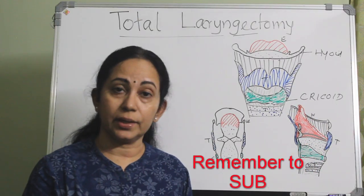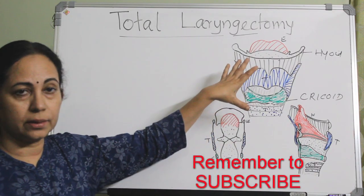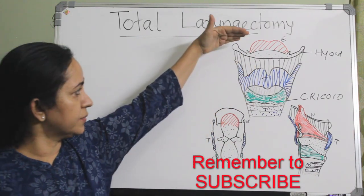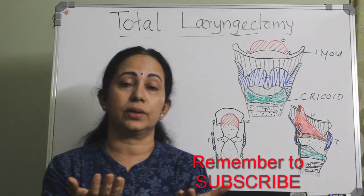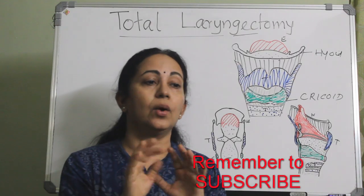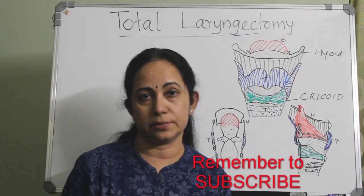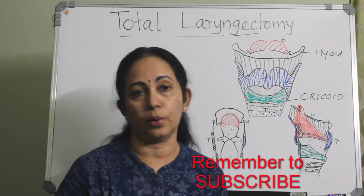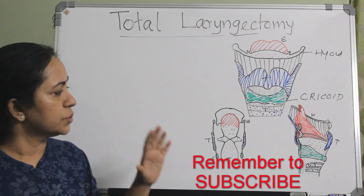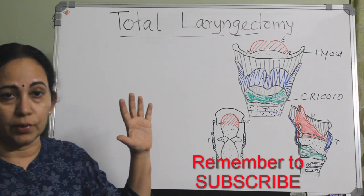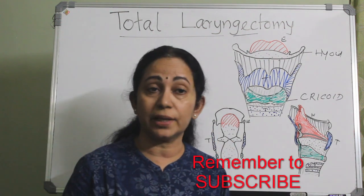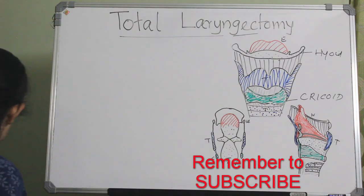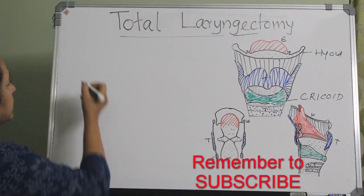In total laryngectomy, we remove the larynx from the hyoid bone up to the cricoid cartilage with the lesion in total, along with 1 cm margins of normal mucosa. Now let's start with the indications.